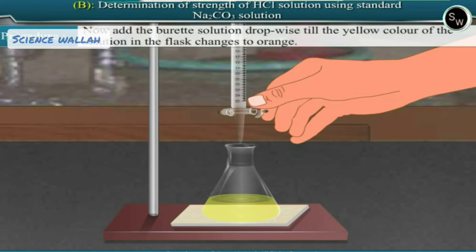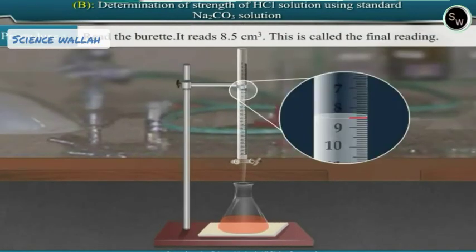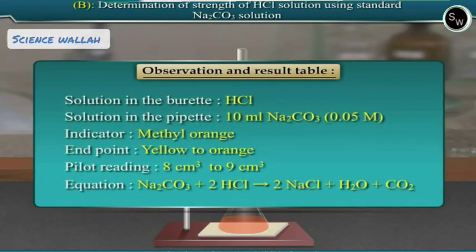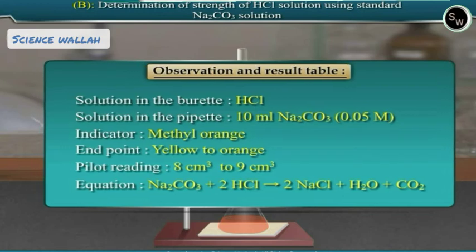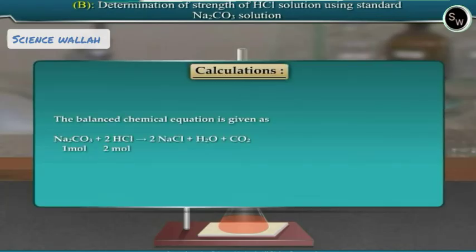Add 8 cm³ of the burette solution directly into the conical flask with continuous shaking. Now add the burette solution dropwise until the yellow color of the solution in the flask changes to orange. Read the burette — it reads 8.5 cm³. This is called the final reading. Note it down in your observation table. Repeat the titration at least twice to obtain a constant burette reading. The constant burette reading obtained is 8.5 cm³.